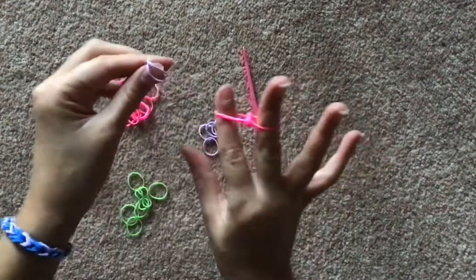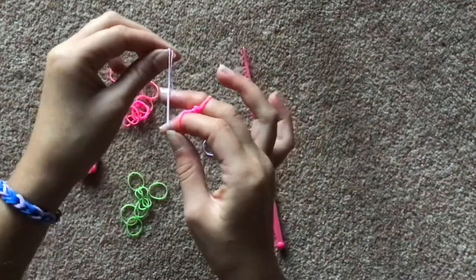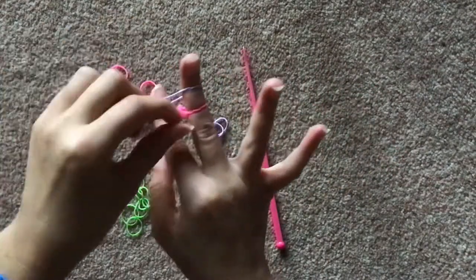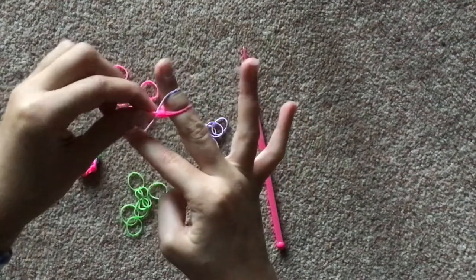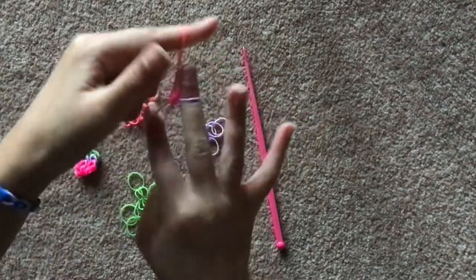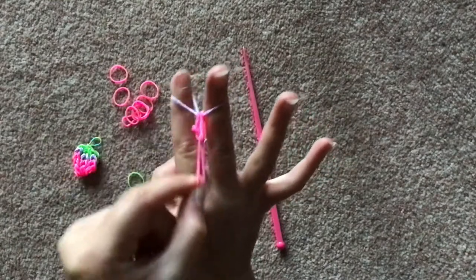Now you're going to take two lilac bands, just putting them on your fingers straight, not crossing them or anything. You're going to get the left side below it and loop it over and do the exact same with the right side and then you can pull it down a bit.